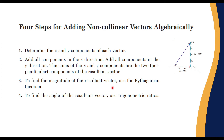To add non-collinear vectors algebraically, you determine the x and y components of each vector. For a resultant R at a certain angle and magnitude, R_x equals R cosine theta and R_y equals R sine theta. You add all x-direction components together, then all y-direction components separately. The sums give the two components of the resultant vector. To find the magnitude, use the Pythagorean theorem, and to find the angle, use trigonometric ratios.